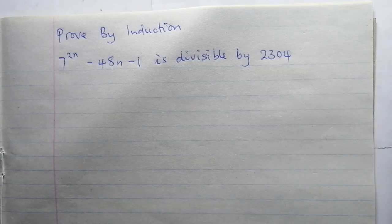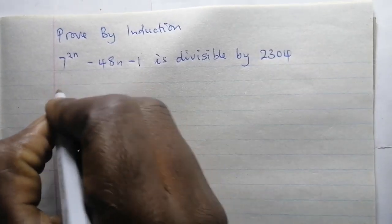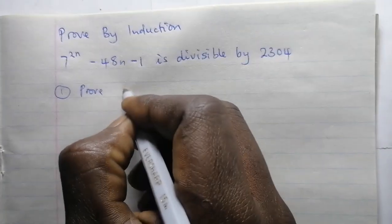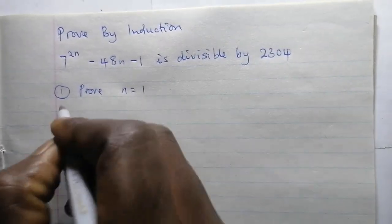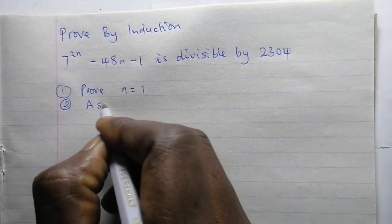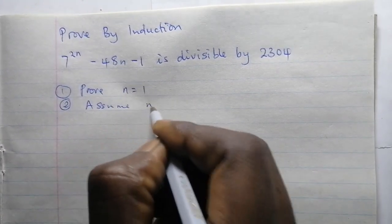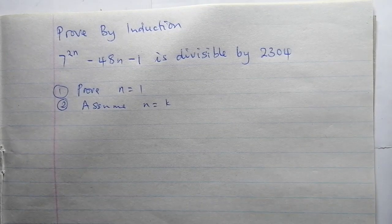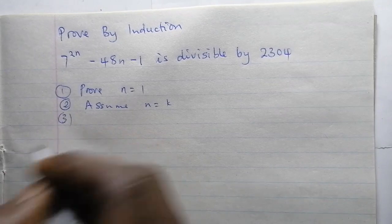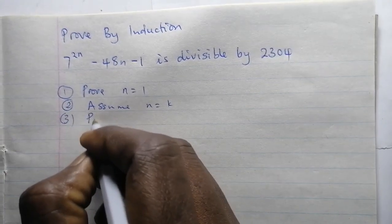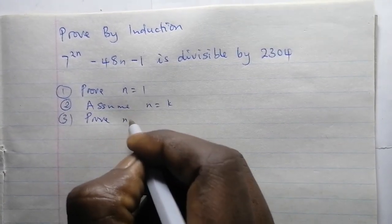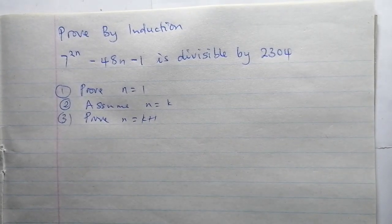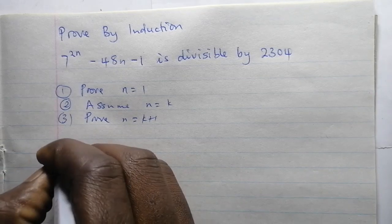For our proof by induction, we are going to go through three stages. The first stage will be to prove the statement is true for n equals 1. The second stage will be to assume n equals k — this is the inductive assumption. The third and last part will be to prove the statement is true for n equals k plus 1.